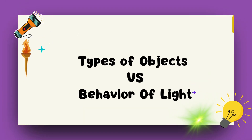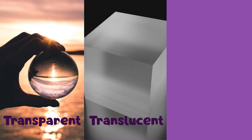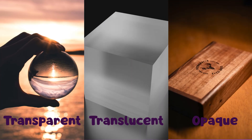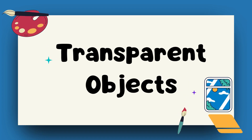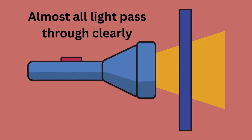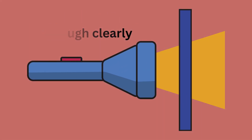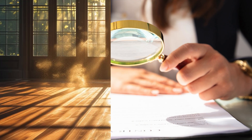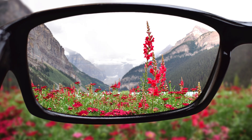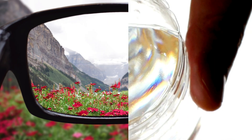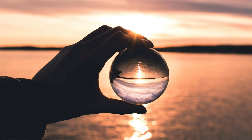Let's meet the three main types of objects: transparent, translucent, and opaque. Transparent objects let almost all light pass through clearly. Think of a magnifying glass, eyesight glasses, or a water bottle — you can see right through them, like they're invisible.